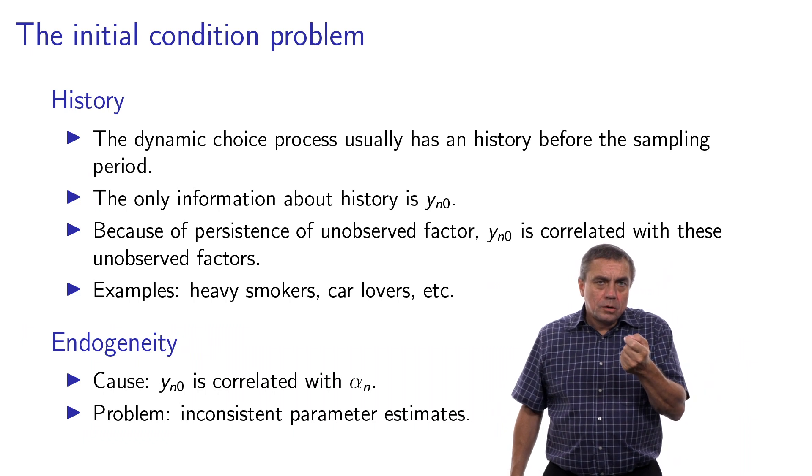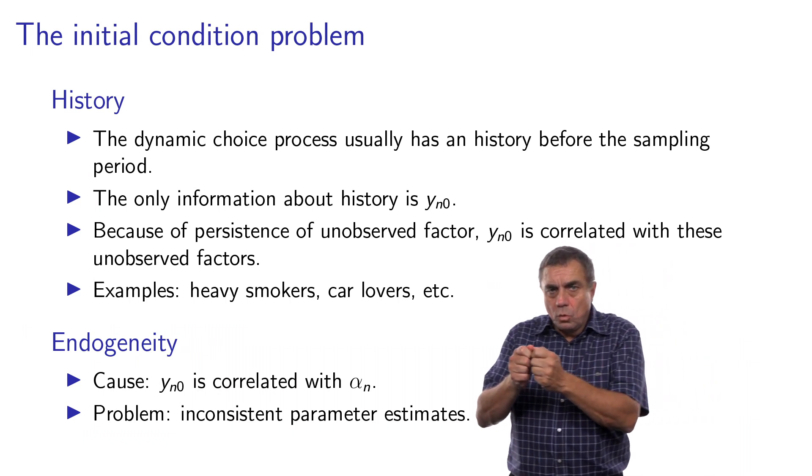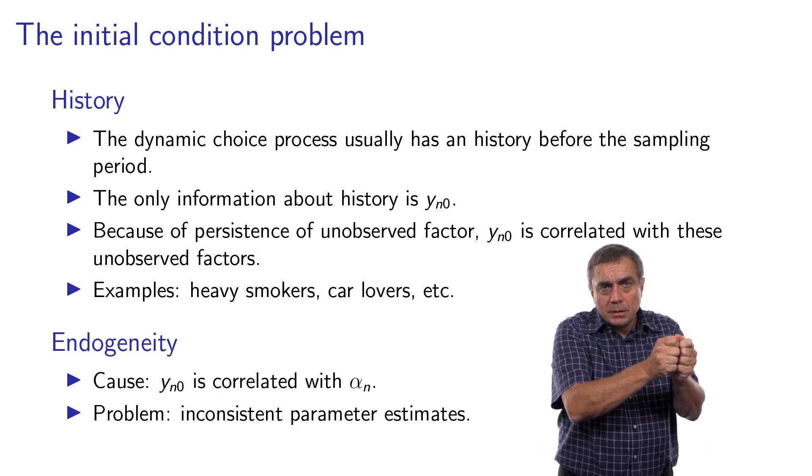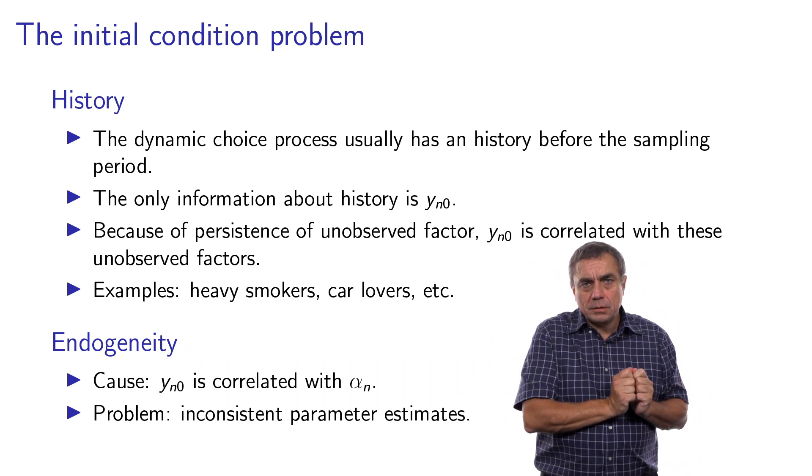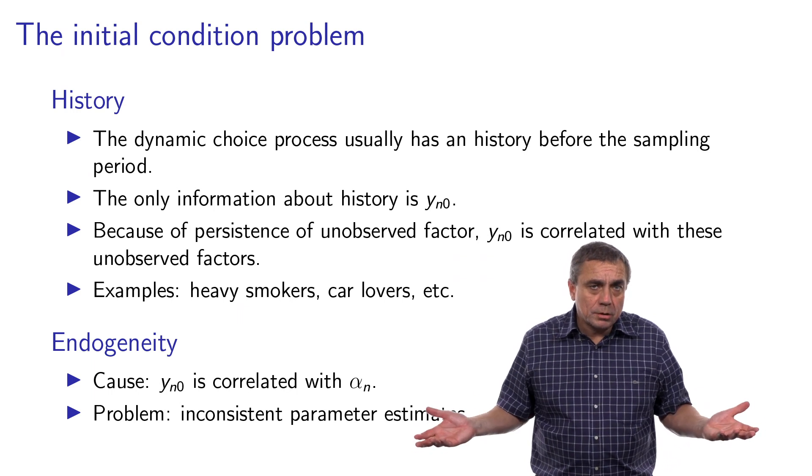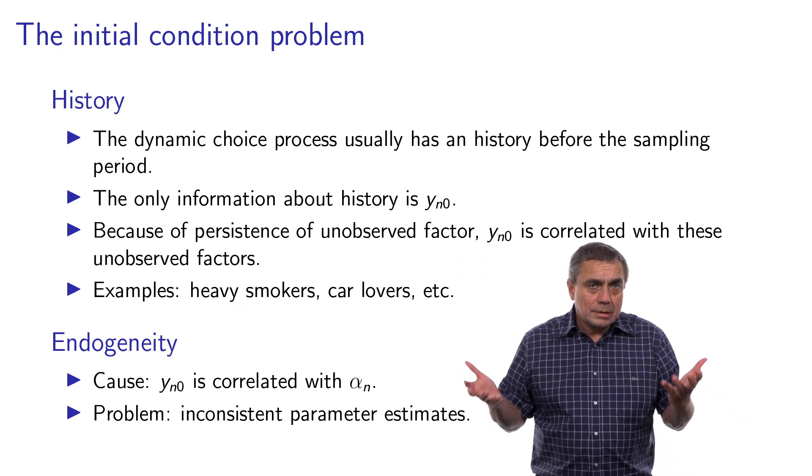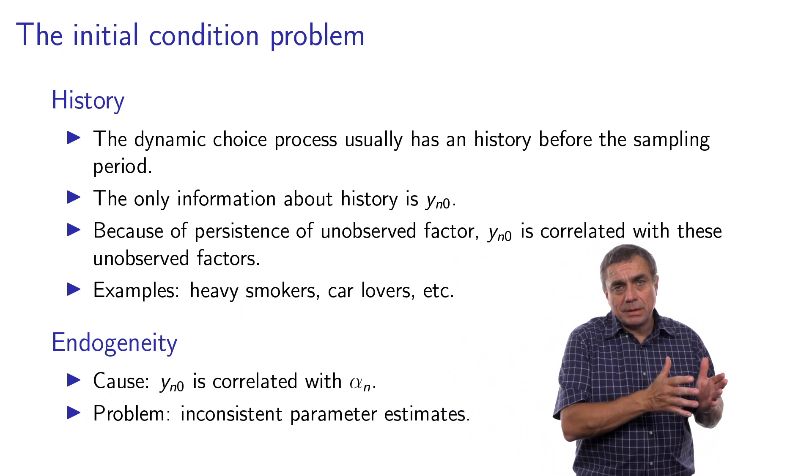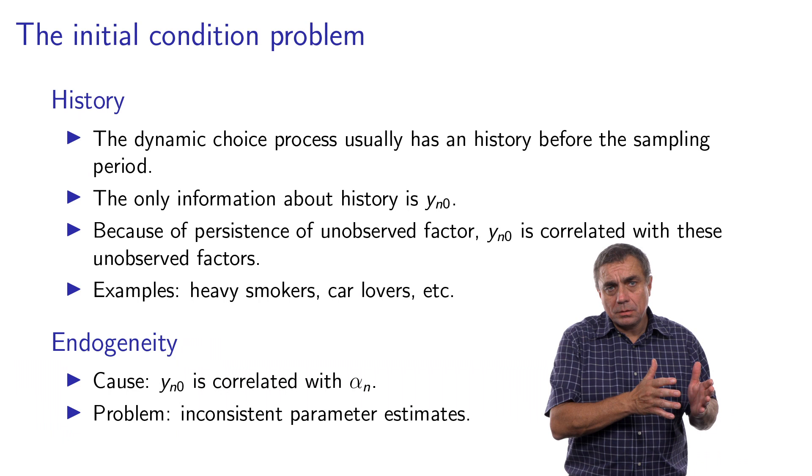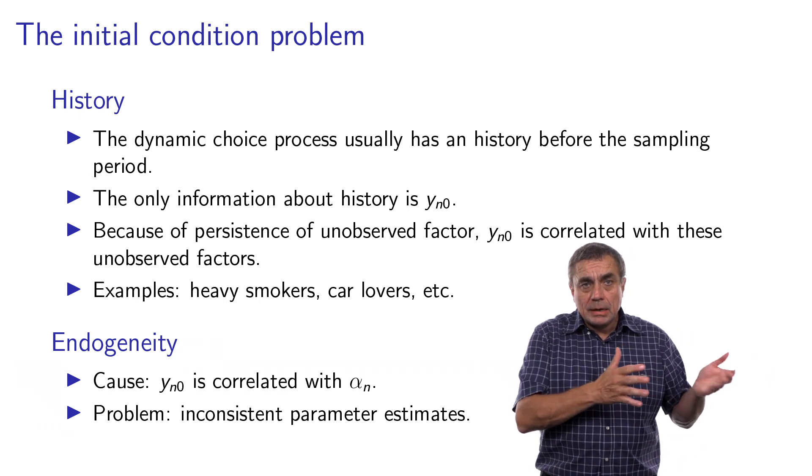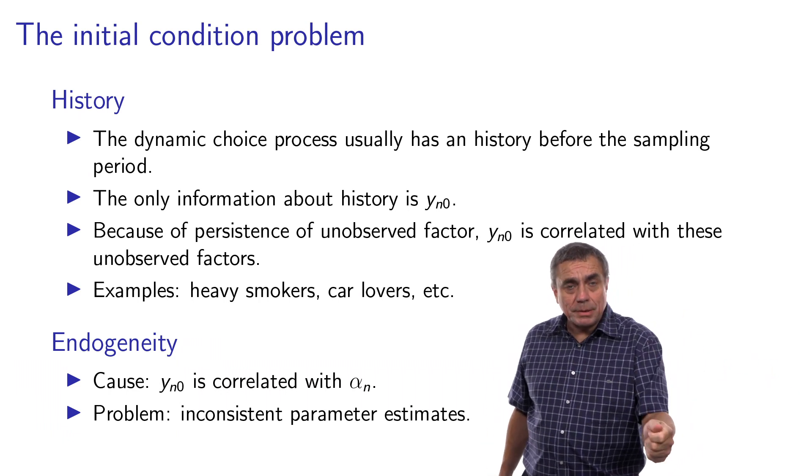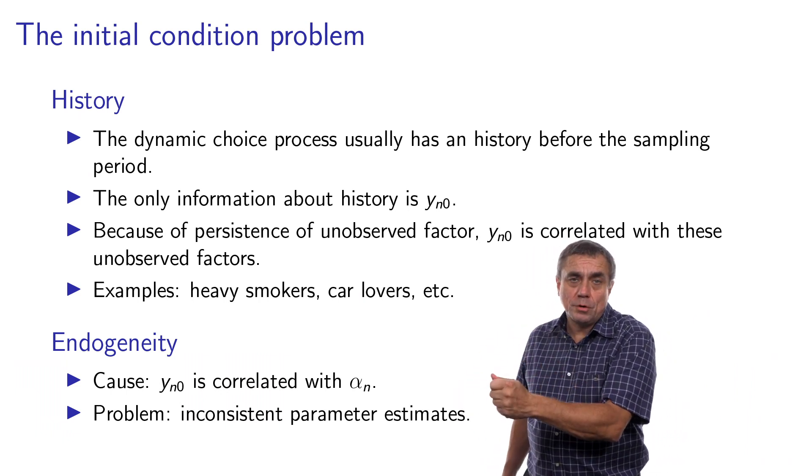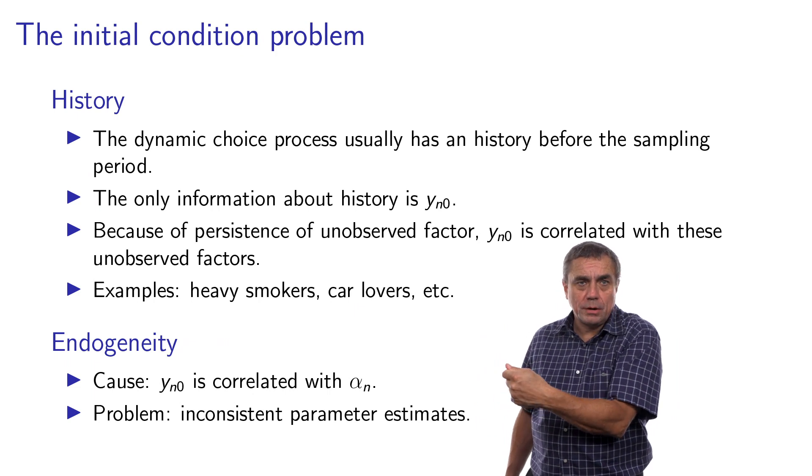Mathematically, the fact that the y, the first y, so the first choice is correlated with the panel effect, is called endogeneity. When you specify models, usually you assume that the error terms are independent from the explanatory variables. This is important. Because if it is not the case, you have endogeneity. And in this case, the first choice is an explanatory variable. And it happens to be correlated with this permanent, unobserved factor alpha, which belongs to the error term.